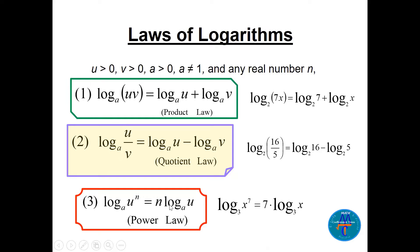The power n comes down and multiplies log base a of u. A simple example: log base 3 of x to the power 7 becomes 7 times log base 3 of x. If we have the right side, we can go back and put the 7 back as the power of x. You can use these properties forward and backward.